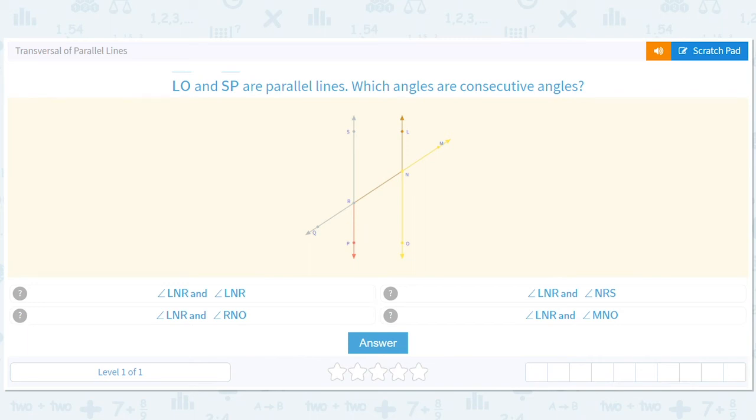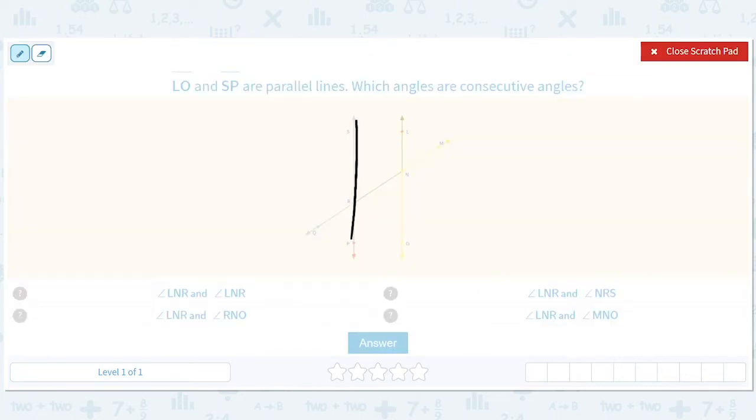Hello all. So LO and SP are parallel lines. We're talking about transversals of parallel lines. A transversal of parallel lines is you have parallel lines and then you've got this line that transverses it or cuts through it. And then there are these names for angles and stuff.